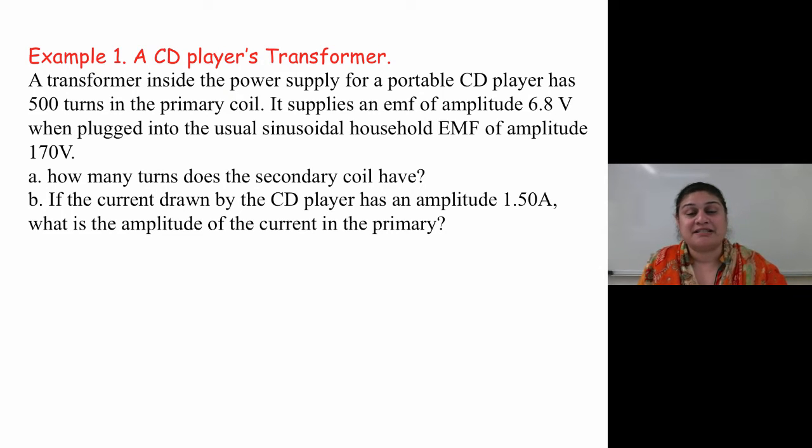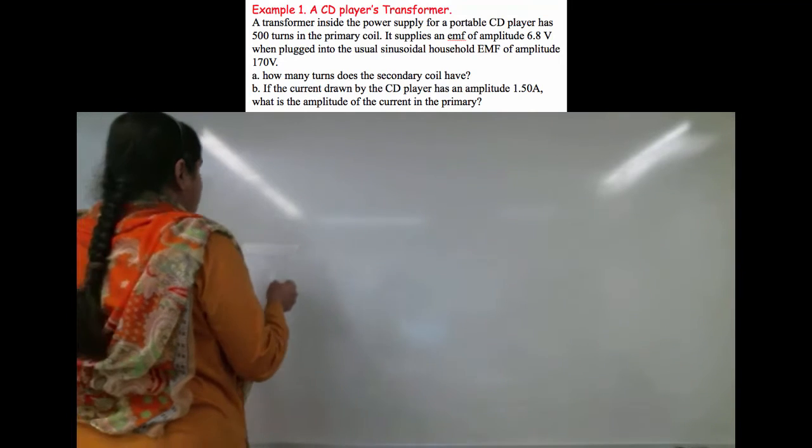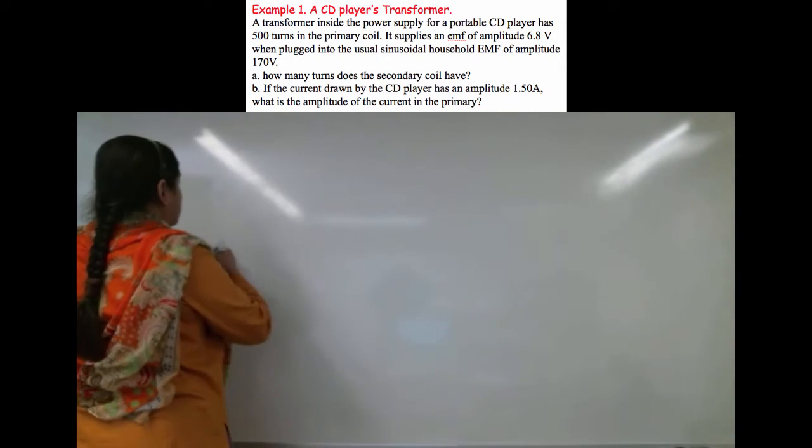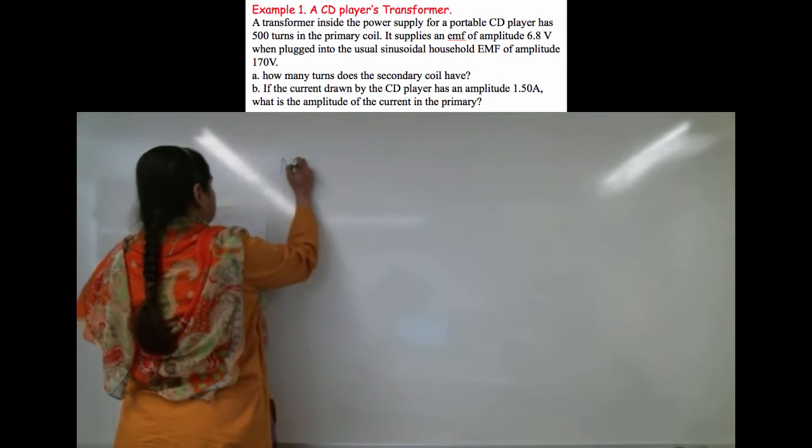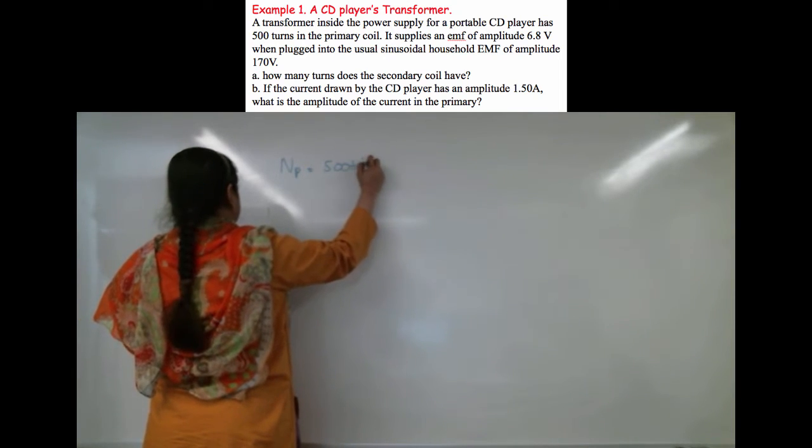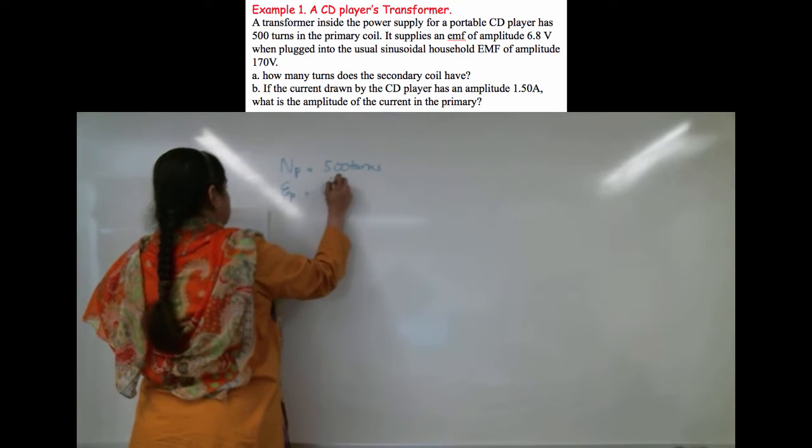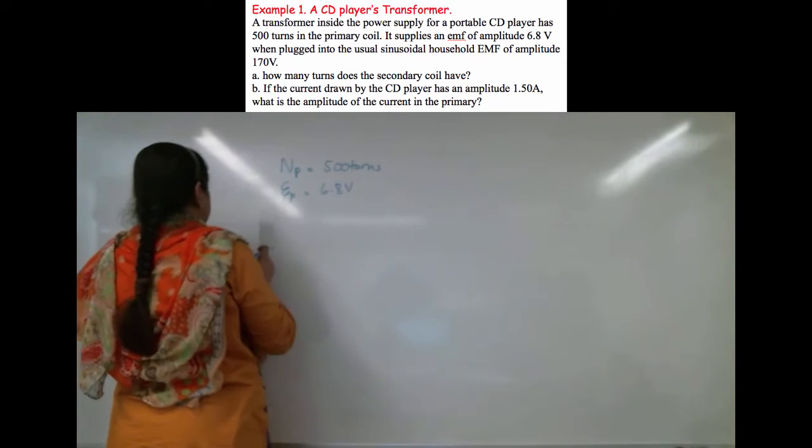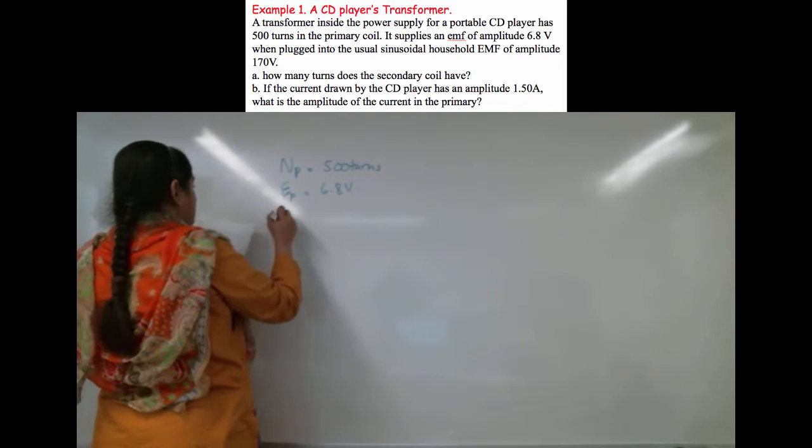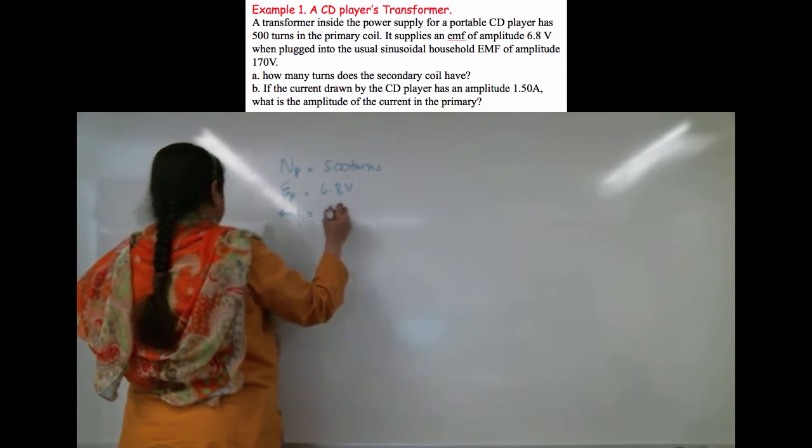If the current drawn by the CD player has an amplitude of 1.5 amps, what is the amplitude of the current in the primary? In this case, the CD player has N primary equals 500 turns, EMF primary is 6.8 volts, and the sinusoidal household EMF is 170 volts.